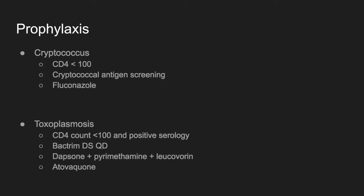For prophylaxis: in patients with a CD4 count of less than 100 for possible cryptococcus, we don't usually give primary prophylaxis — instead, we get an antigen screening test, since the antigen is typically positive in the blood three weeks before neurological symptoms appear. If prophylaxis is given, it would be with fluconazole. For toxo, with a CD4 count of less than 100 and positive serology, prophylaxis is Bactrim double-strength daily, with second-line options available.